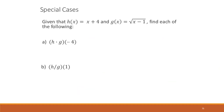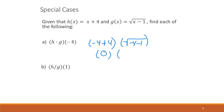There are two more special cases. The first: we get (−4 + 4) times the square root of (−4 − 1), which equals 0 times the square root of −5. Even though the square root of negative 5 is imaginary, anything times 0 is just 0. So the answer is simply 0.